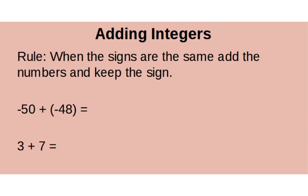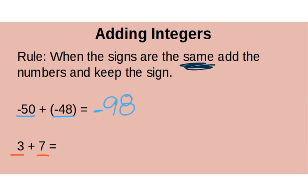Let's talk about the rules for adding integers. The first rule: when the signs are the same, add the two numbers and keep the sign. For example, negative 50 plus negative 48 — since they have the same sign, I just add the two numbers: 50 plus 48 is 98, and since both are negative, the answer is negative 98. And for two positives, 3 plus 7 is 10 — that shouldn't be an issue.